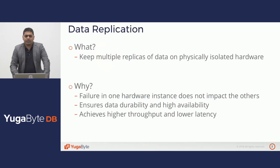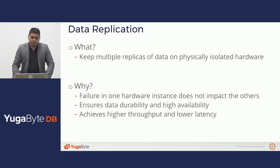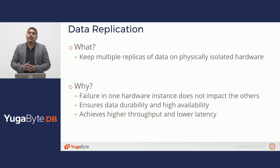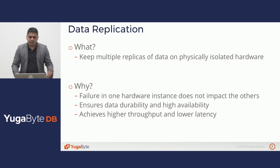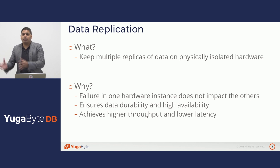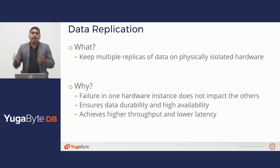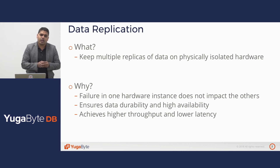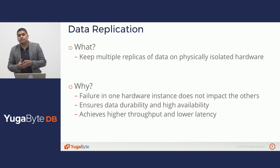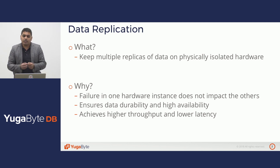Let's understand why data replication is important. What is data replication? It's the approach of keeping multiple replicas of data on physically isolated hardware. Why do we do data replication? Because failure in one hardware instance should not impact the other hardware instances. The net result is your data becomes more durable and highly available, since any of the remaining available replicas can serve client requests. Once we start using replicas to serve client requests, that also gives us higher throughput and lower latencies, since there are more replicas available to serve the clients.